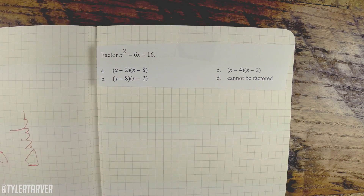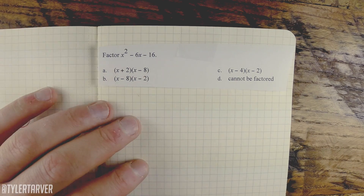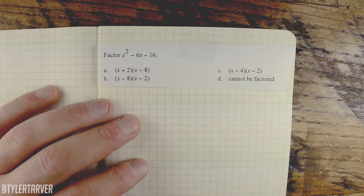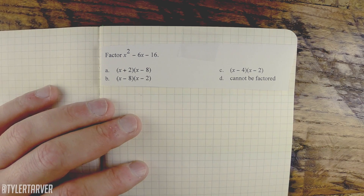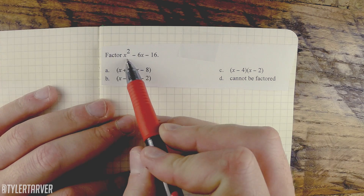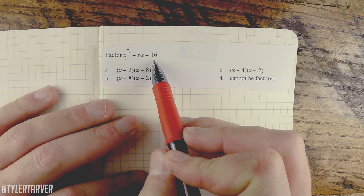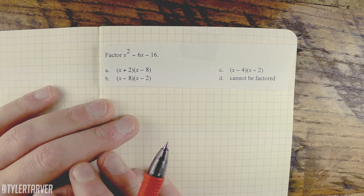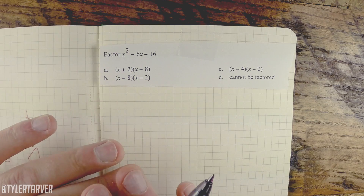Why hello there, ladies and gentlemen! My name is Theodore Roosevelt and I am here with tarveracademy.com. Today's problem is to factor x squared minus 6x minus 16. Give it a shot — pause this and then resume and see if you got it right. Ready? Go!